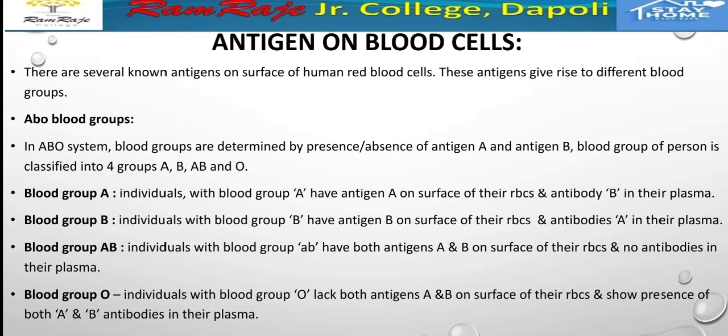There are several known antigens on the surface of human red blood cells. These antigens give rise to different blood groups. There are blood group systems such as the ABO blood groups: A, B, AB, and O. In the ABO system, blood groups are determined by the presence or absence of antigen A and antigen B. The blood group of a person is classified into four groups: A, B, AB, and O.